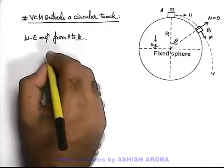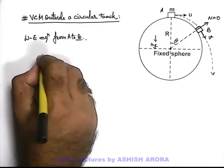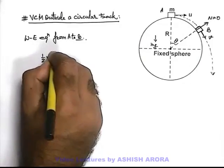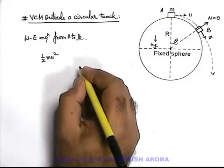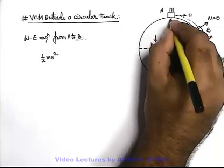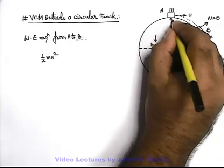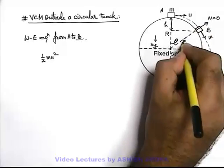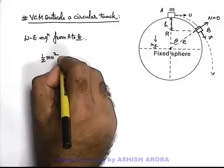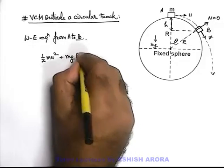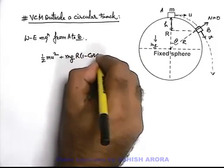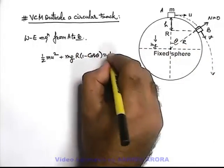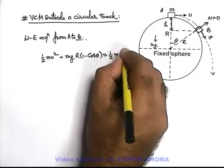In this situation we can say that at initial position it is half mu² the kinetic energy of body. As it has fallen by distance h, this distance h can be given as the total R minus R cos theta. So we can write it plus mgh, h is R(1 - cos theta), equals the final kinetic energy that is half mv².